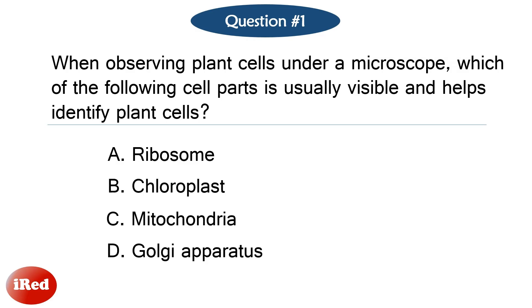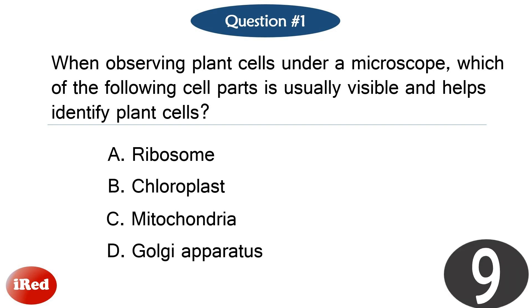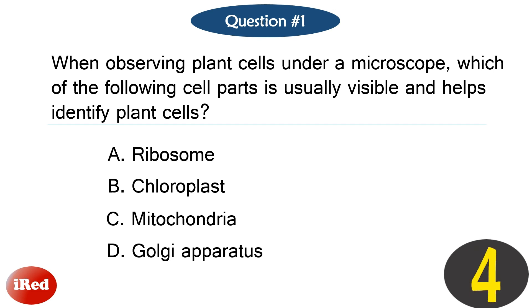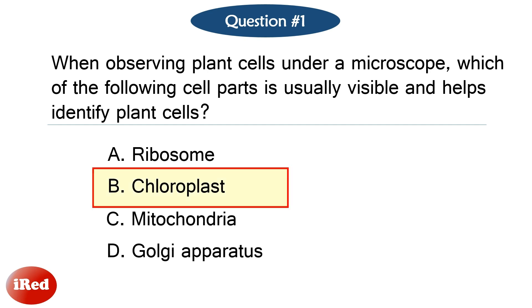Question number one. When observing plant cells under a microscope, which of the following cell parts is usually visible and helps identify plant cells? The correct answer is letter B, chloroplast.